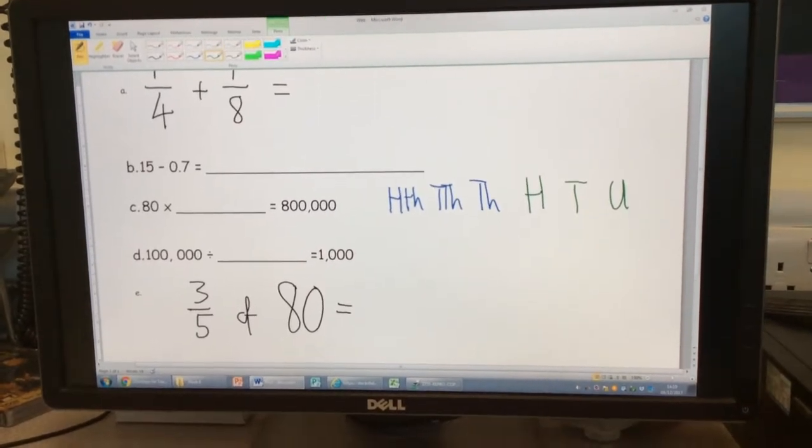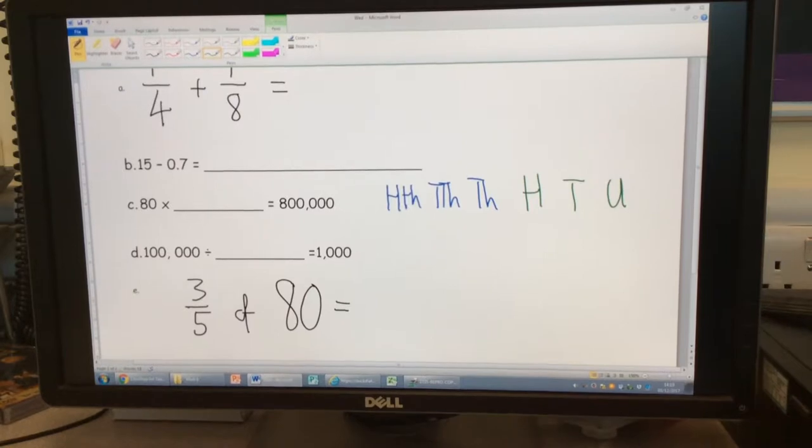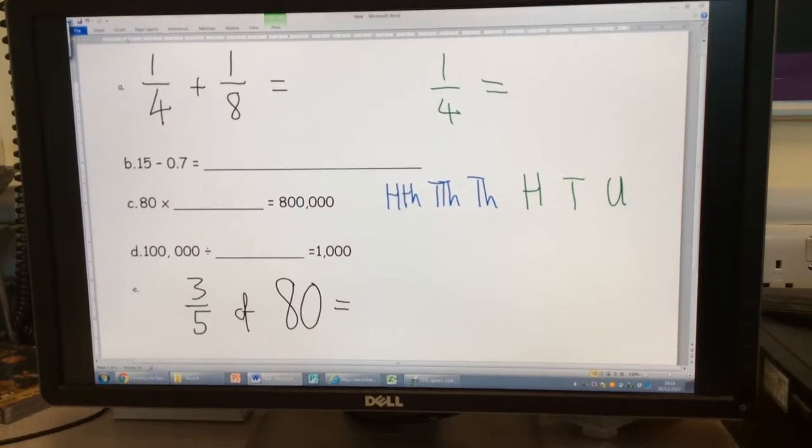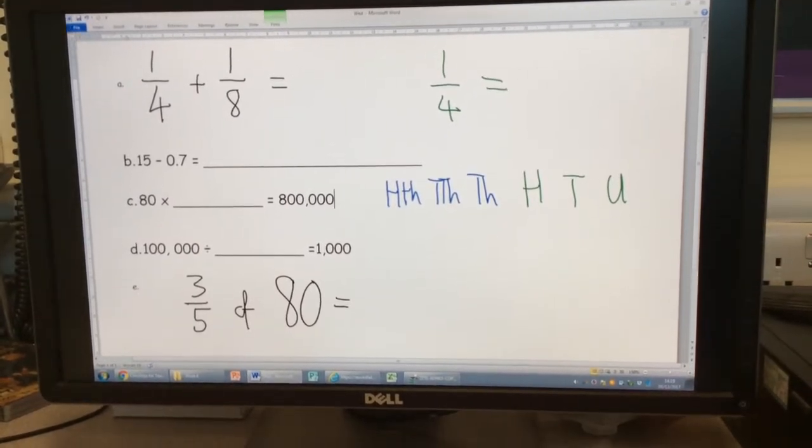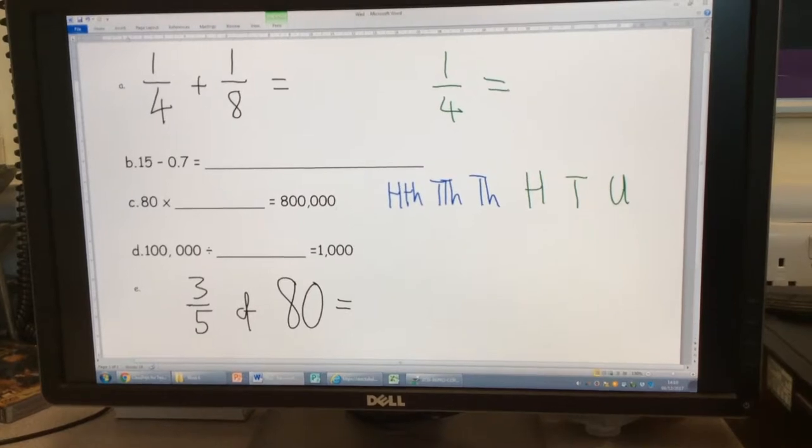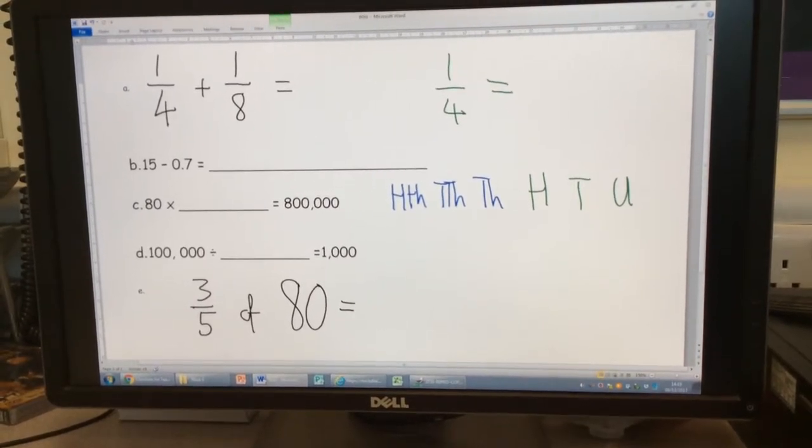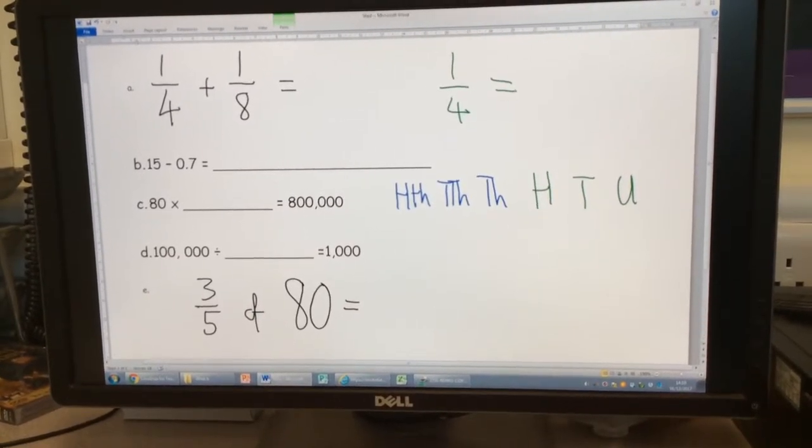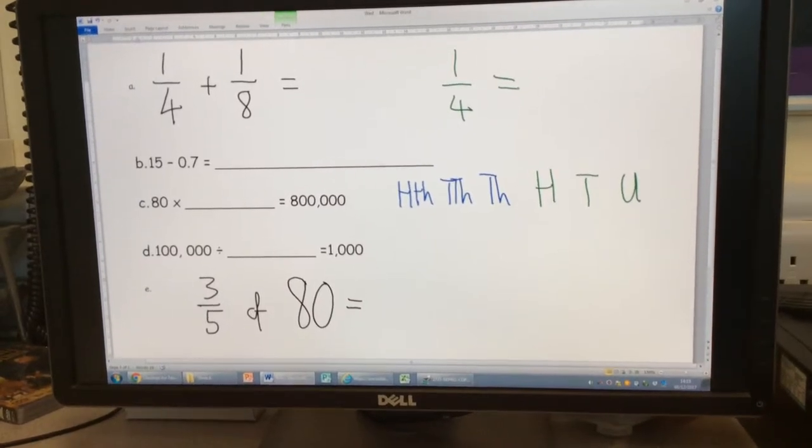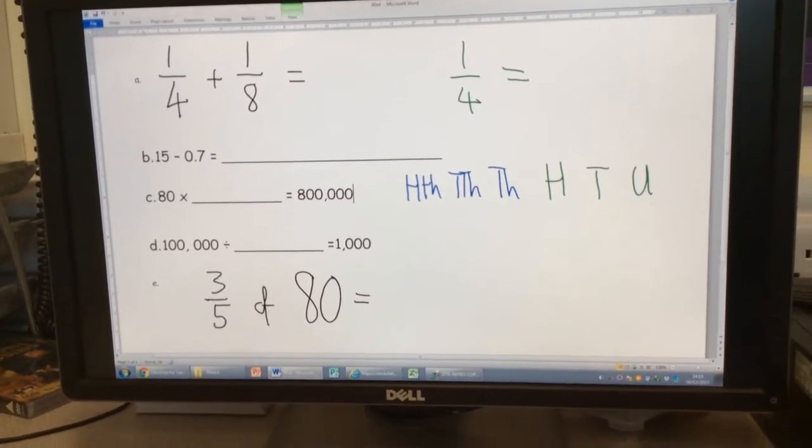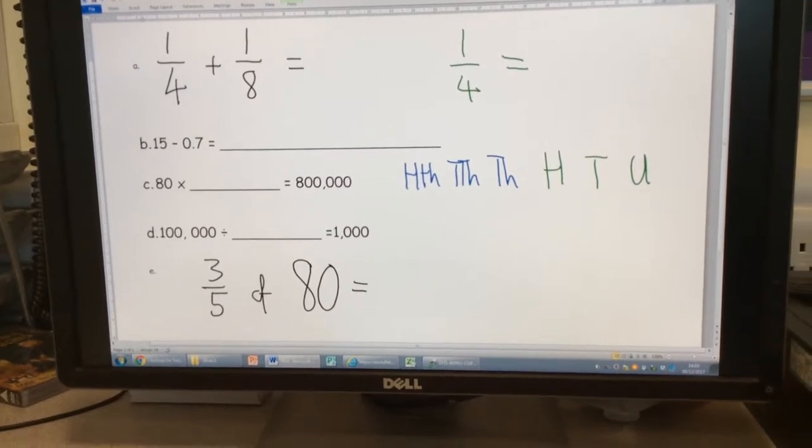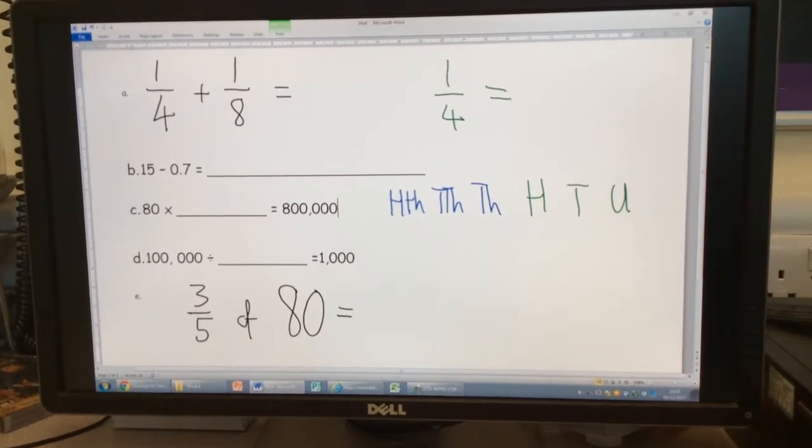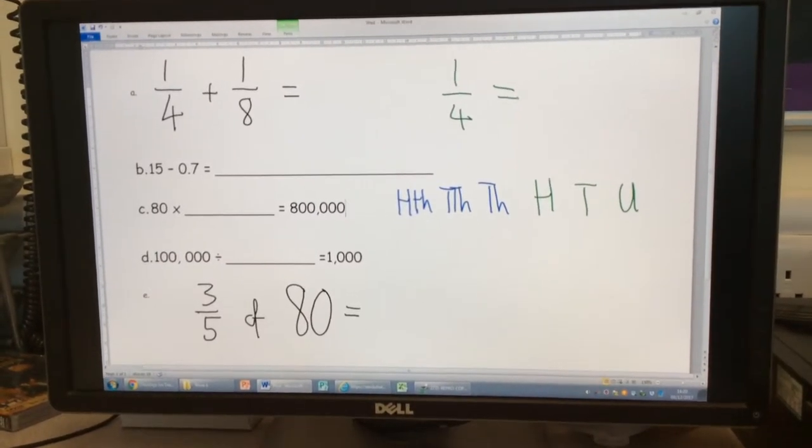Which denominator am I going to change in order to make them the same? Holly. One quarter. We're going to change one quarter. So what am I going to change one quarter to, Holly? One eighth. How did you change it to one eighth? Eight divided by four.